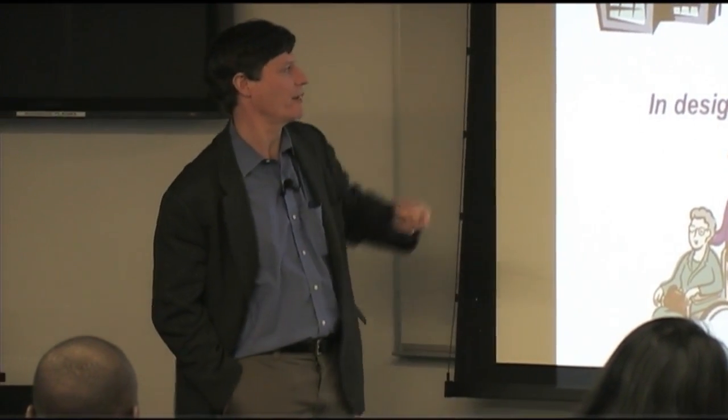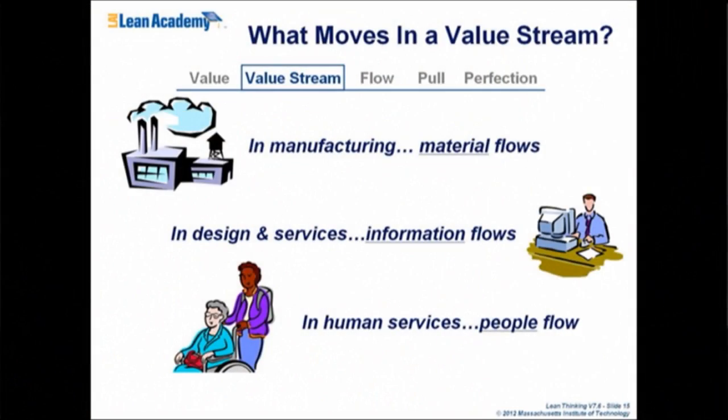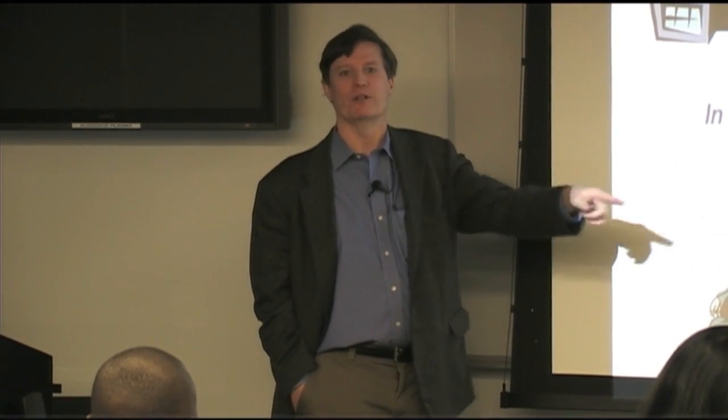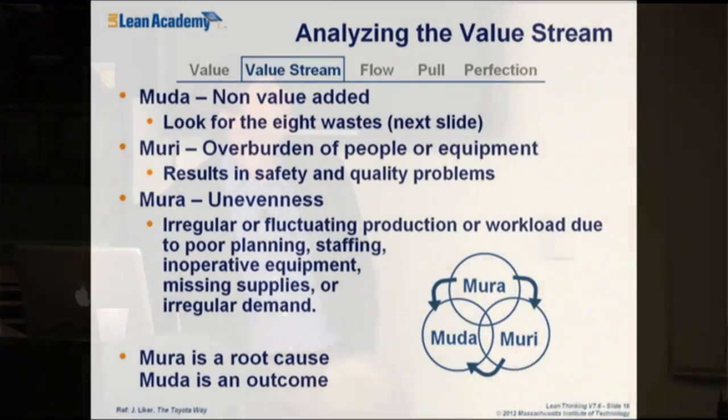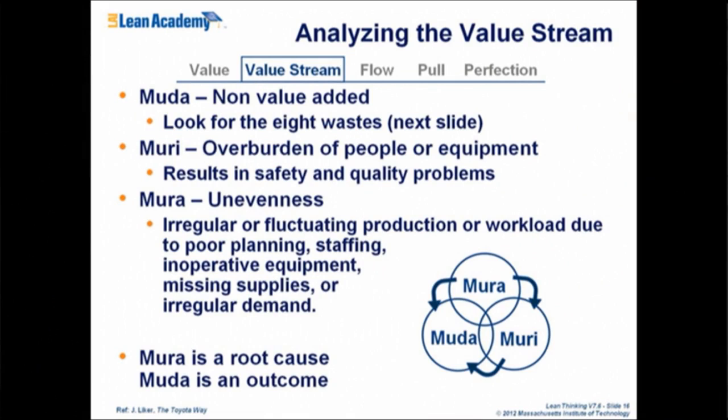In human services — medical, for example — it may be people, the actual customer flowing through the system. That could also be Disneyland — a great lean company. They process people and make them happy; they think of it very much as a process. The definition of the value stream is the set of activities that adds value to the work product to satisfy the customer. So the first-order analysis of the value stream is to look for things that don't do that — look for waste.